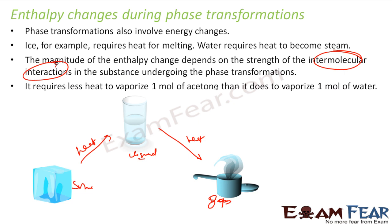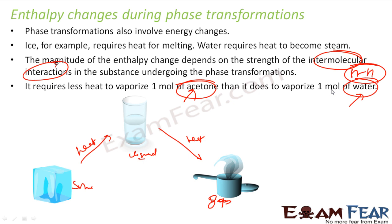For example, in this case I have acetone and water. It requires very less energy to vaporize one mole of acetone than to vaporize one mole of water, because in water we have hydrogen bonding, which we have learnt in the past chapter. Because of this, the intermolecular force interaction is high, and water needs more energy to evaporate one mole than the energy required to evaporate one mole of acetone.